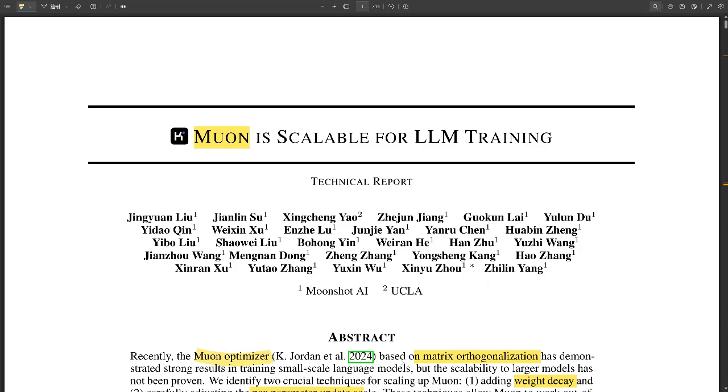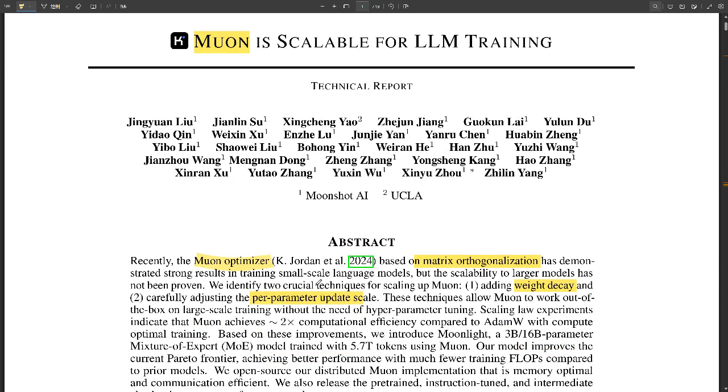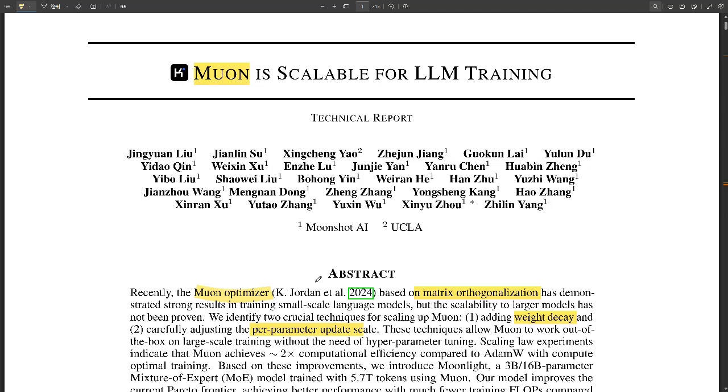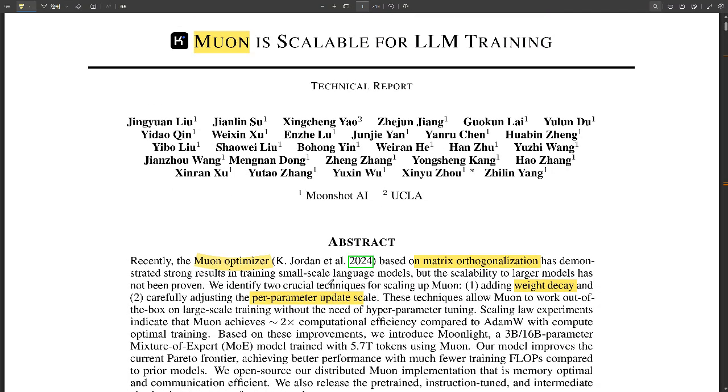Seriously cool AI research that has the potential to really shake things up. It's interesting stuff. We're talking about this new large language model called Moonlight and the optimizer it uses, which is called Muon.